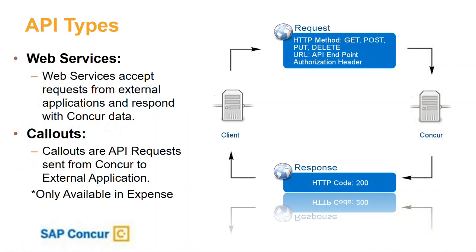Another type of API is called call-outs, and they work in reverse from regular traditional API calls. That's where we set up a secure connection between our servers and a server on either your premise or a hosted server, and we can make those API calls out to that server. That would be a pre-configured step somewhere, such as in an expense form, where we send a call-out to your server and you would have to respond. I'll get more into call-outs in a couple more slides.